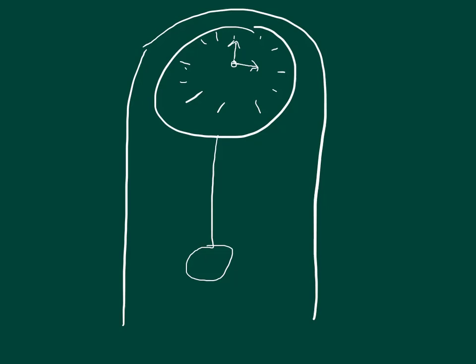Part B, if the pendulum period is given by the equation T equals 2 pi times the square root of L over G, where L is the length, does the change in length of the rod cause the clock to run fast or slow?